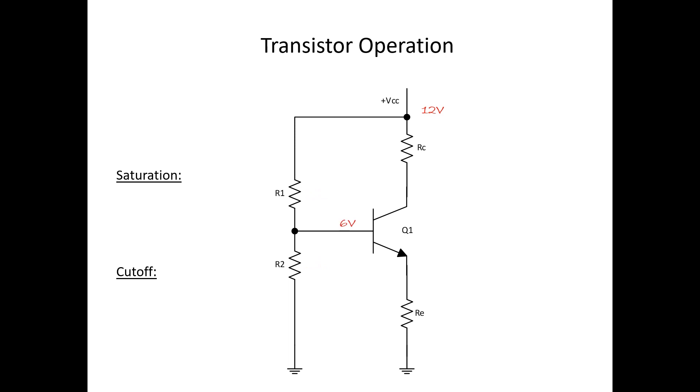Now I'm sure you learned in course one that if R1 and R2 are equal value resistors with 12 volts applied, we should have 6 volts sitting on the base, Q1.